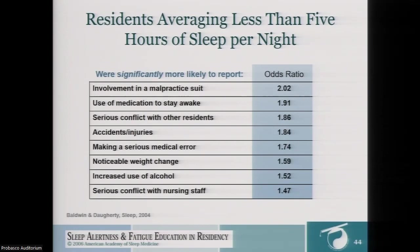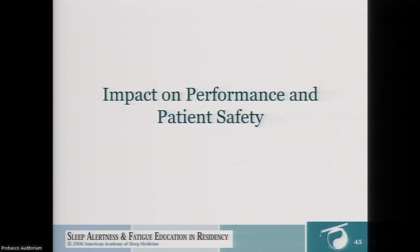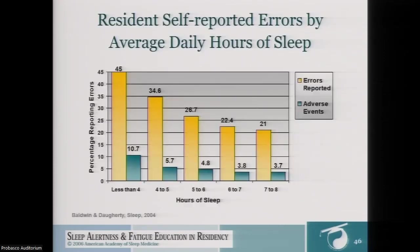Statistics: residents averaging less than five hours of sleep per night have increased involvement in malpractice suits, increased use of medication to stay awake, increased serious conflict with other residents and nursing staff, increased accidents and injuries, increased risk of making a serious medical error, noticeable weight changes, and increased alcohol use. Resident self-reported errors increase with less sleep, as do adverse events to patients. We want to reduce these as much as possible.